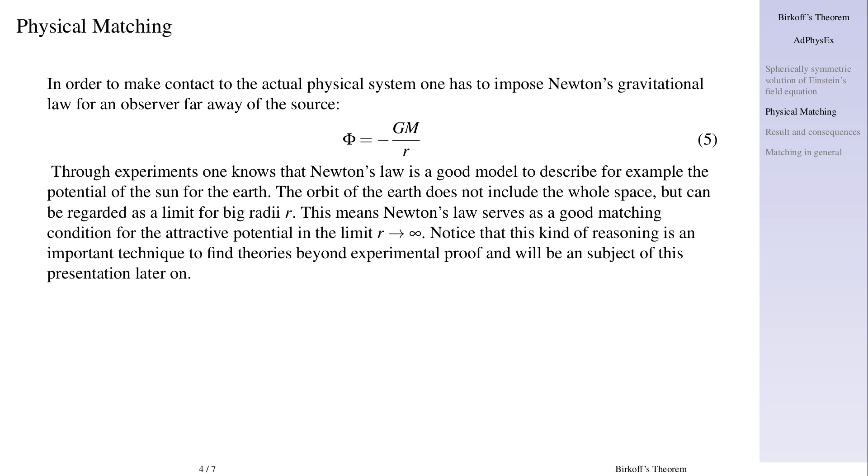Through experiments one knows that Newton's law is a good model to describe for example the potential of the sun for the earth. The orbit of the earth does not include the whole space, but can be regarded as a limit for big radii r. This means Newton's law serves as a good matching condition for the attractive potential in the limit r goes to infinity. Notice that this kind of reasoning is an important technique to find theories beyond experimental proof and will be a subject of this presentation later on.